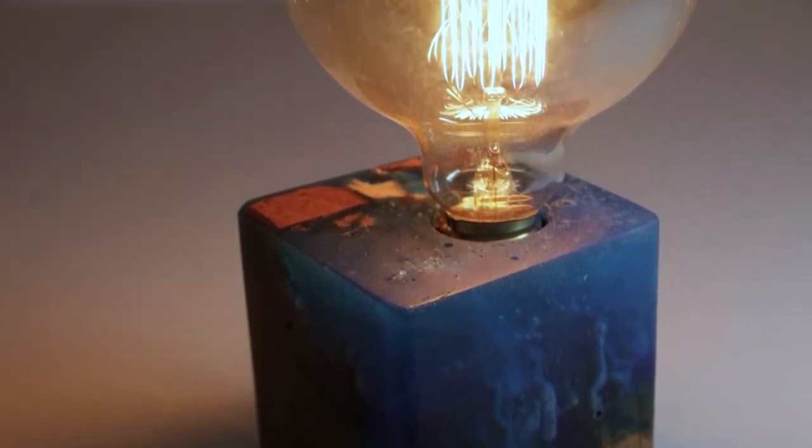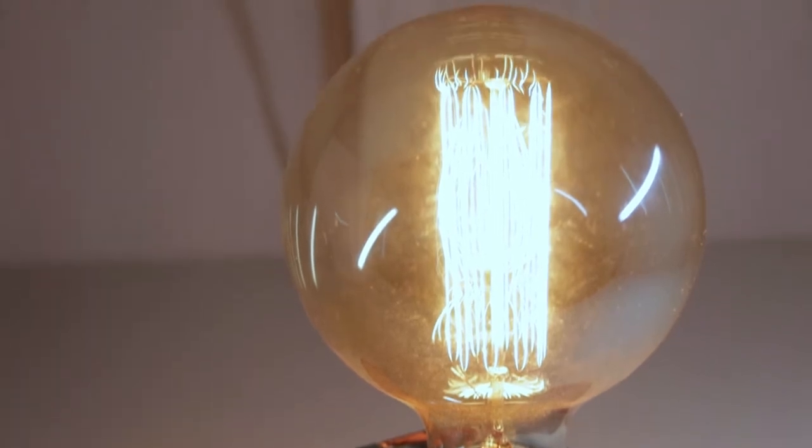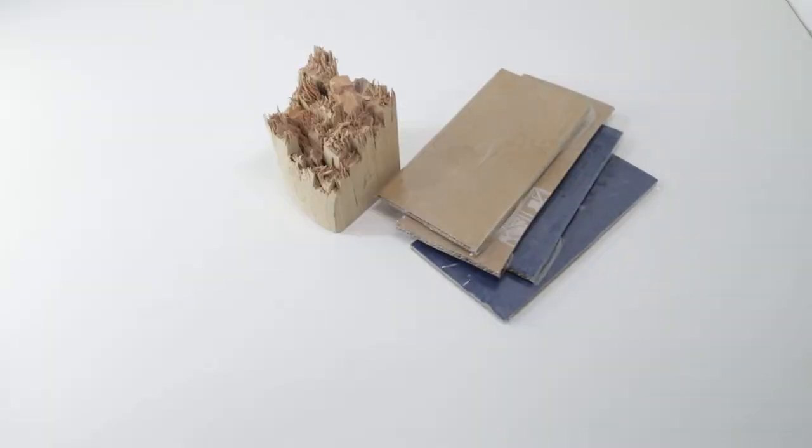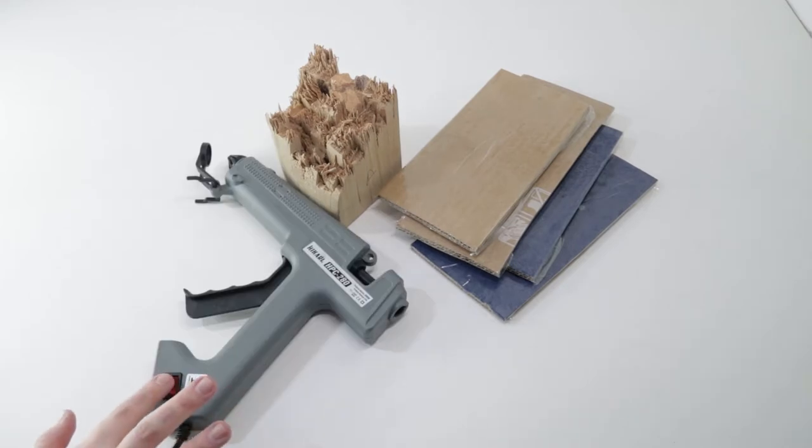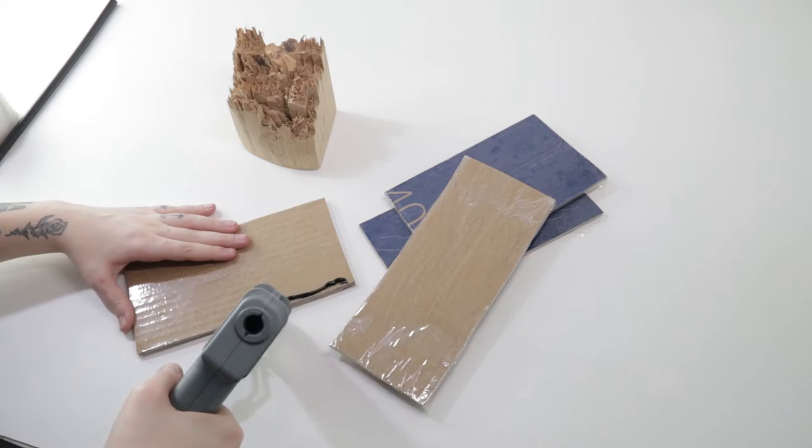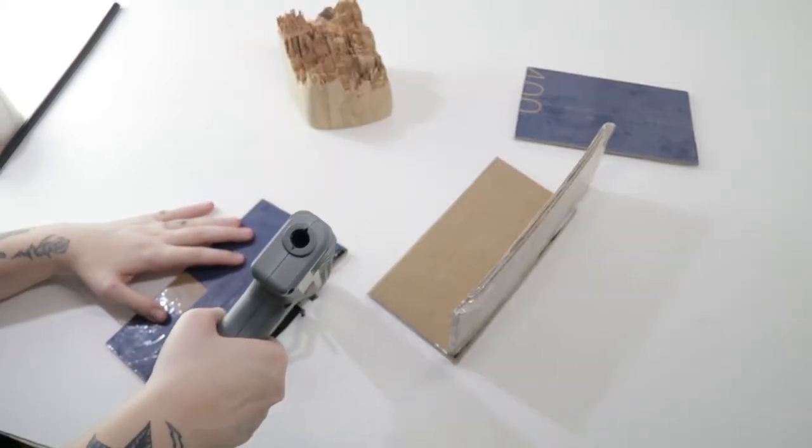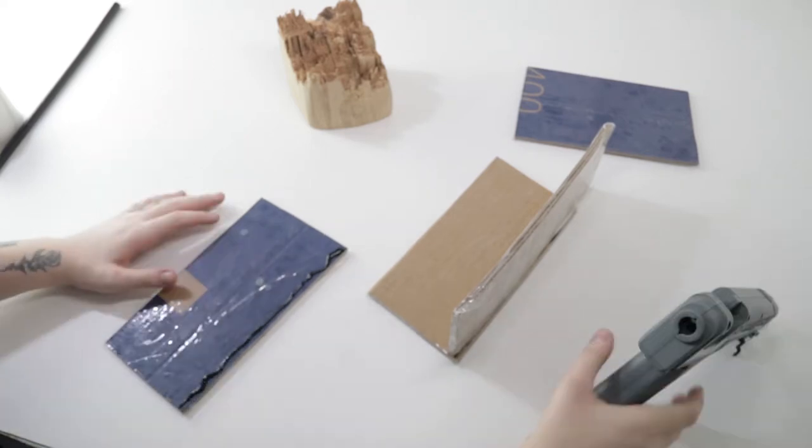Today I'm going to show how I made this lamp with wood and resin. So I cut four pieces of cardboard, cover them with tape, and then glue them together with hot glue.